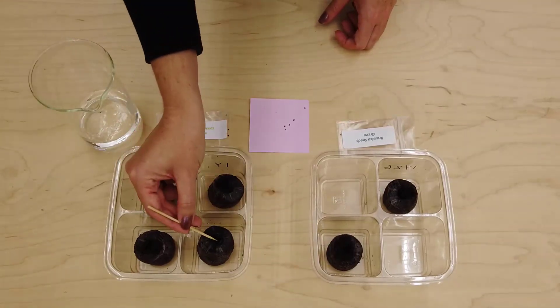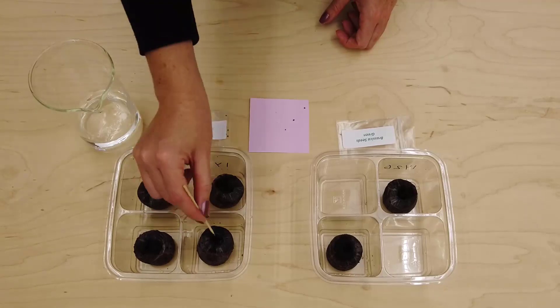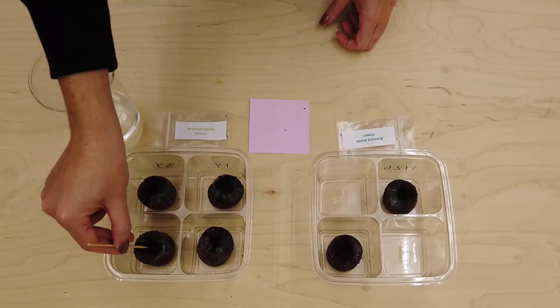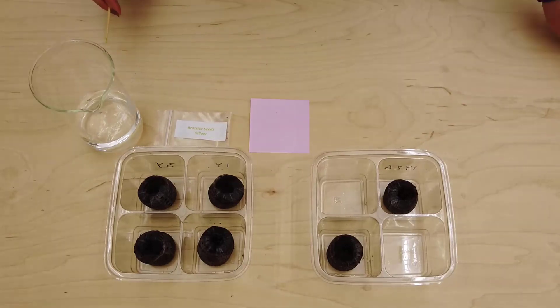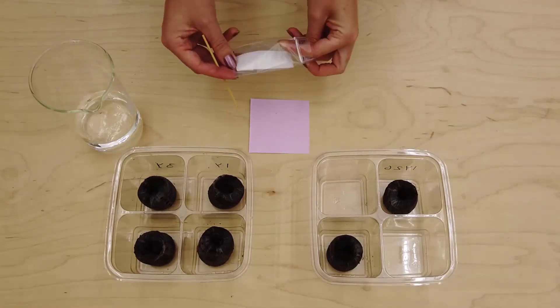Do not plant the seed deeper than 1 cm into the soil. You will want to plant the seeds according to the treatments. For treatments with multiple seeds, place the seeds in a triangle formation. Each seed should get its own hole.